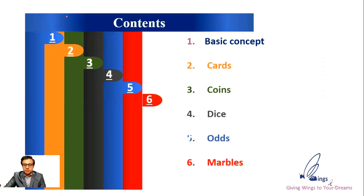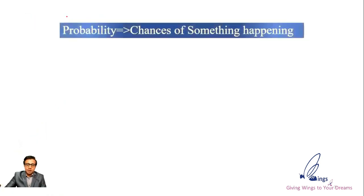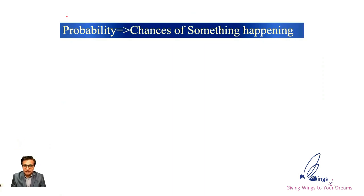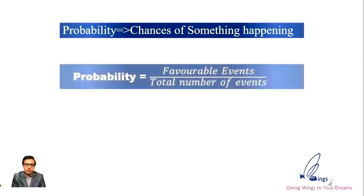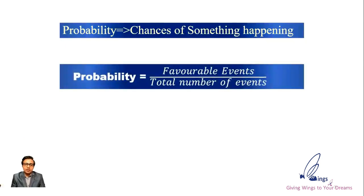Let us start with the basics first. What is probability? If I ask this question, most of you will answer: chances of something happening. That's a basic understanding. But what's the formula? The formula is favorable events divided by total number of events. Now, what do we mean by favorable?